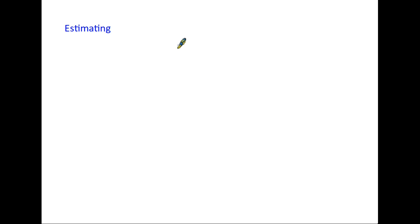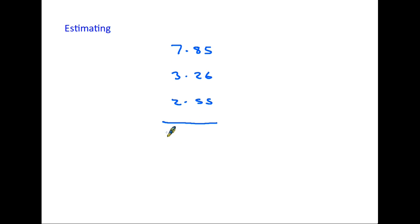Sometimes being able to round to the nearest pound or ten pence actually makes things easier for us, because there are questions when we are asked to estimate an answer. Estimate means we still have to use maths — it's not a guess — but we can round amounts to find our answer. Let's say we are in a shop and we buy three items: the first is seven pounds 85, then three pounds 26, and the last item is two pounds 55.